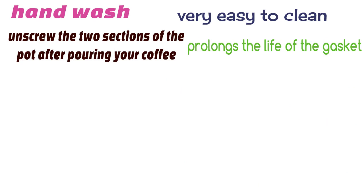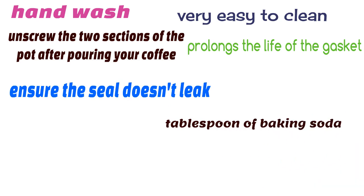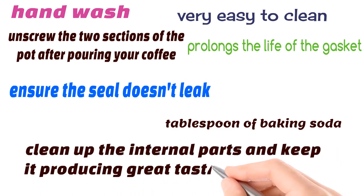Wipe any excess coffee grounds from around the grounds basket where it makes contact with the gasket so the seal doesn't leak. And every so often make a so-called brew with a tablespoon of baking soda that will clean up the internal parts and keep it producing great tasting espressos.